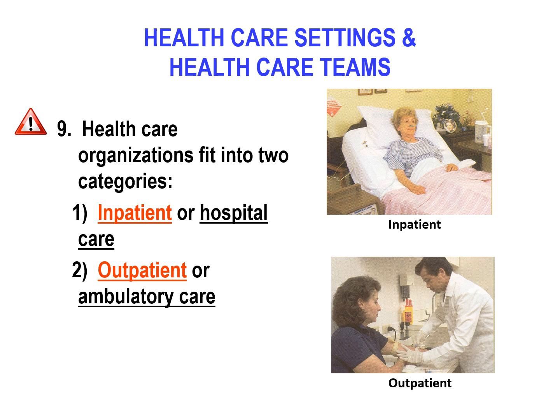Now we're going to move on to healthcare settings and healthcare teams. You'll be filling out your review guides as we go through these. We have inpatient or hospital care, and then outpatient or ambulatory care. For inpatient care, patients are up on the floor or in ICU — you go into their room, draw their blood, transport it to the lab, results are run and go back on the patient record. For outpatient or ambulatory care, a patient may come in just to have lab results done, go to the outpatient lab, or they're seeing their doctor who sends them down to the outpatient lab.